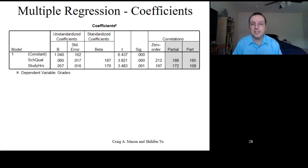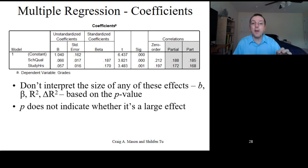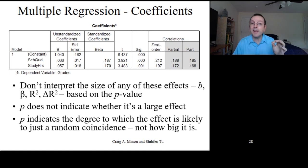Now, just like in simple regression, or really any analysis, don't interpret the size of any of these effects, whether it's the unstandardized coefficient, the standardized beta, the r-squared, or as we'll talk about later, the change in r-squared, based on the p-value. The p-value does not indicate whether it's a large effect. The p-value only indicates how likely it is that the effect is just random, not how big it is.